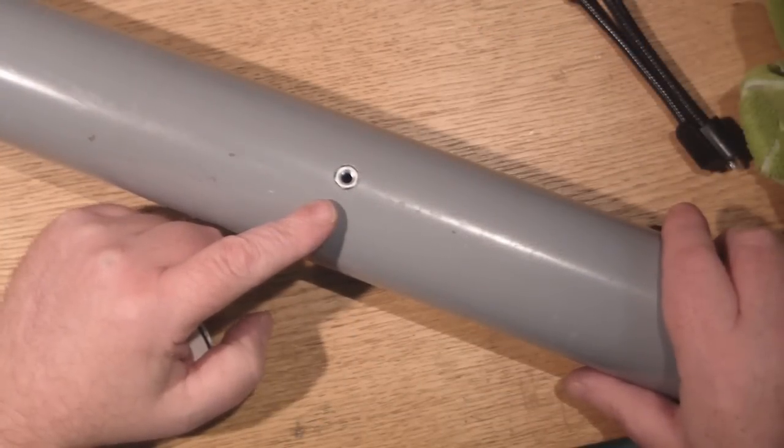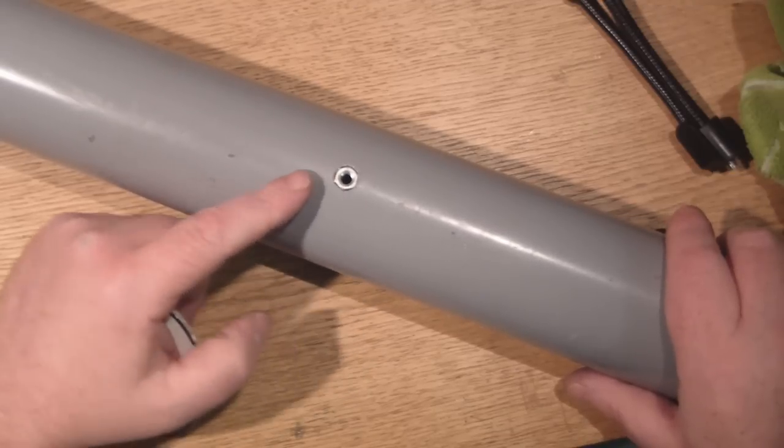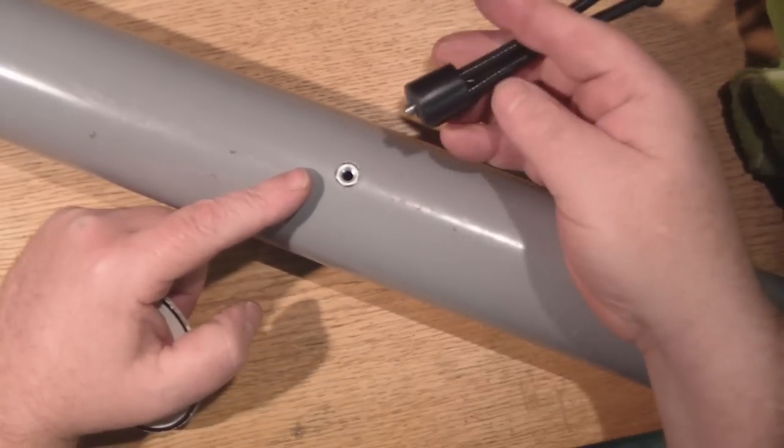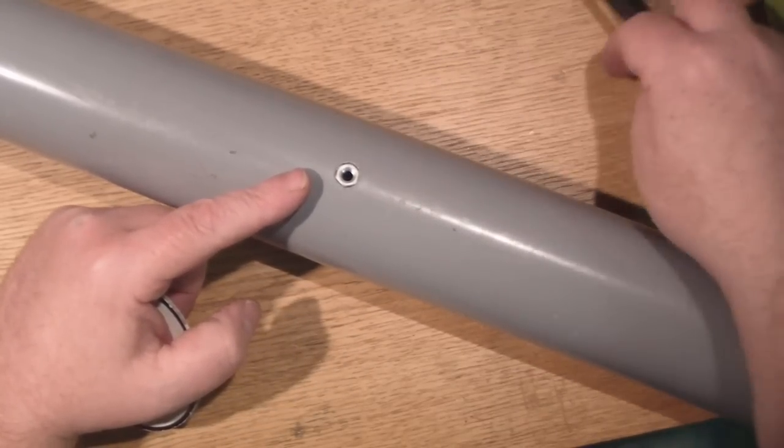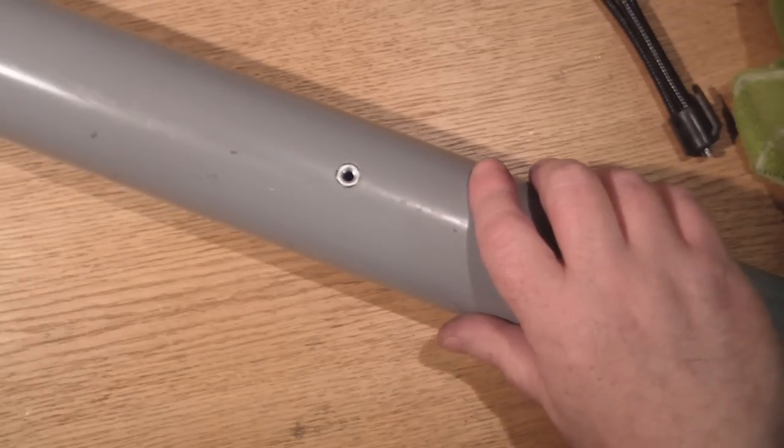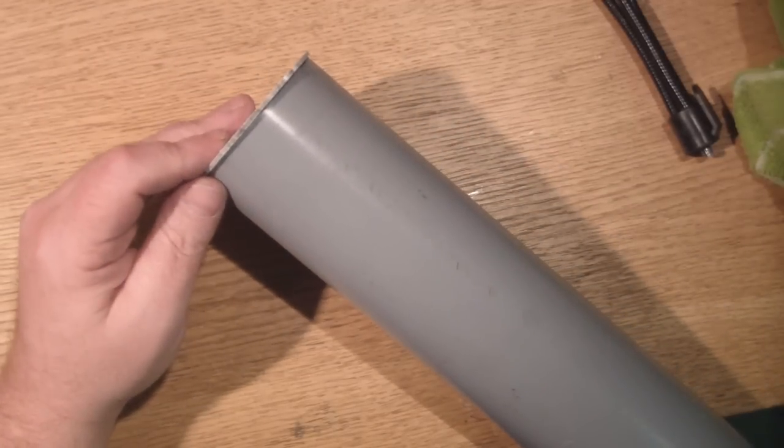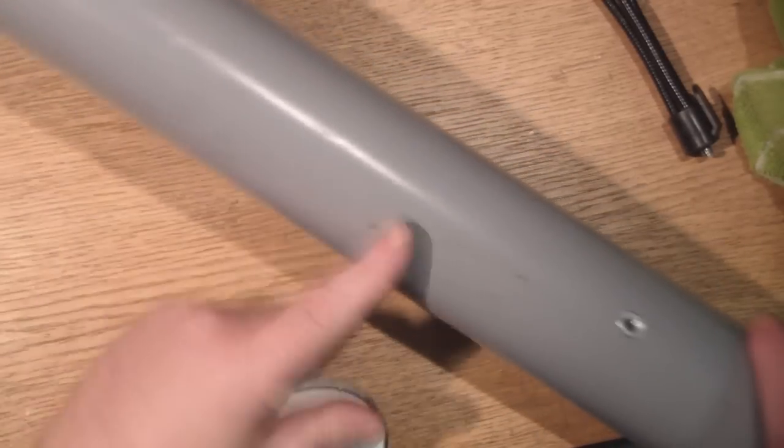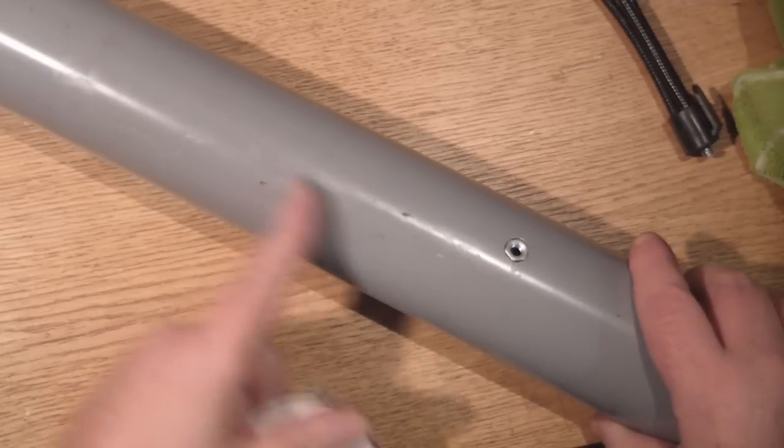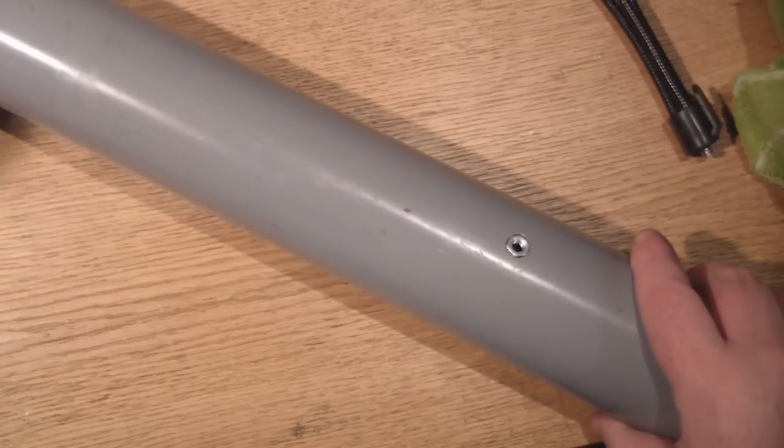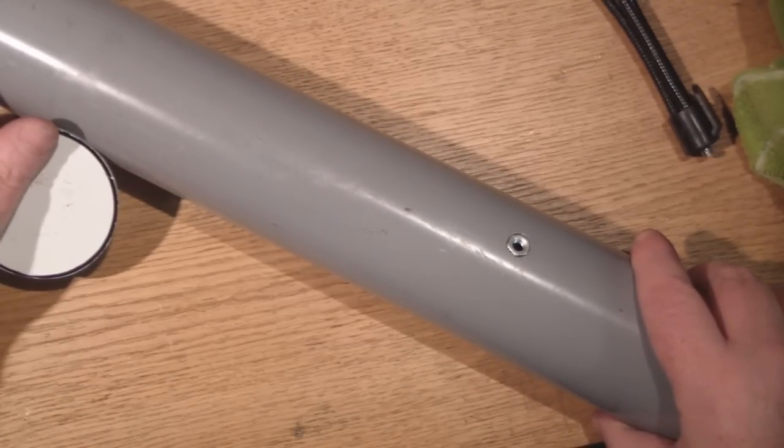So that's the nut in place and I've epoxied it down so it's nice and strong so we can attach a tripod to it now. So finally we've just got to glue the last end cap in place and sand it down and give all this a good sanding as well so it's a nice key for some paint and then we'll give it a test.